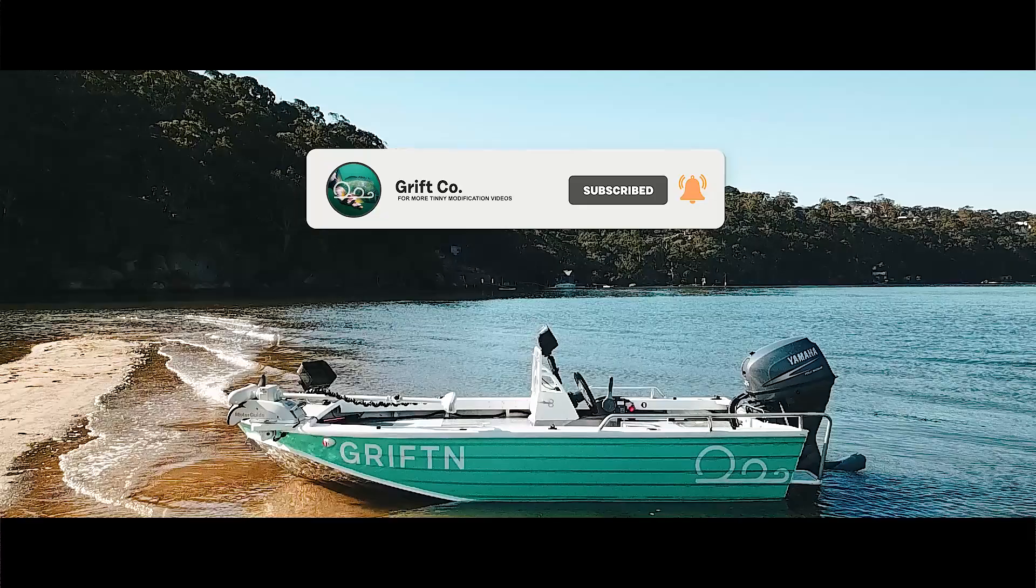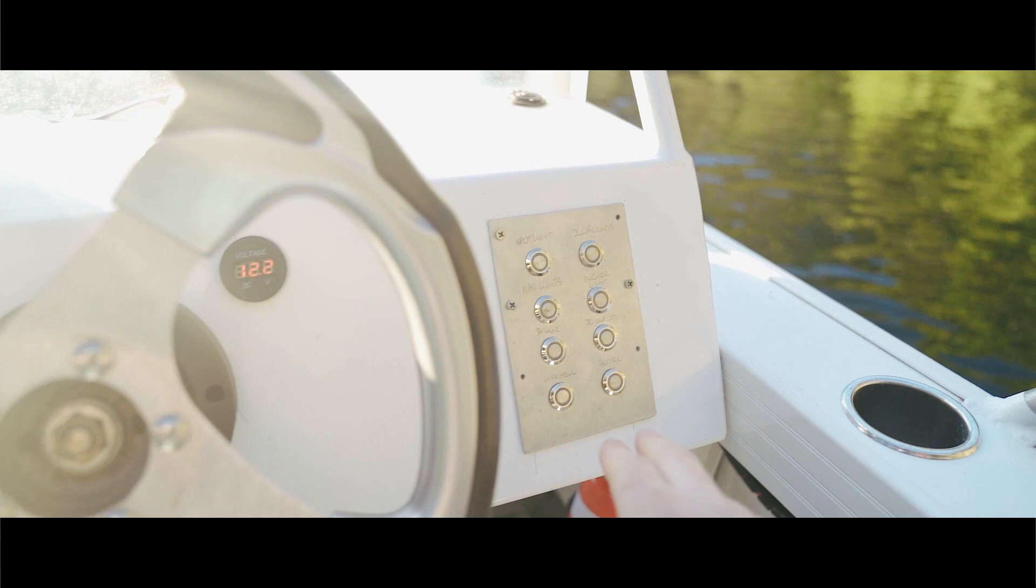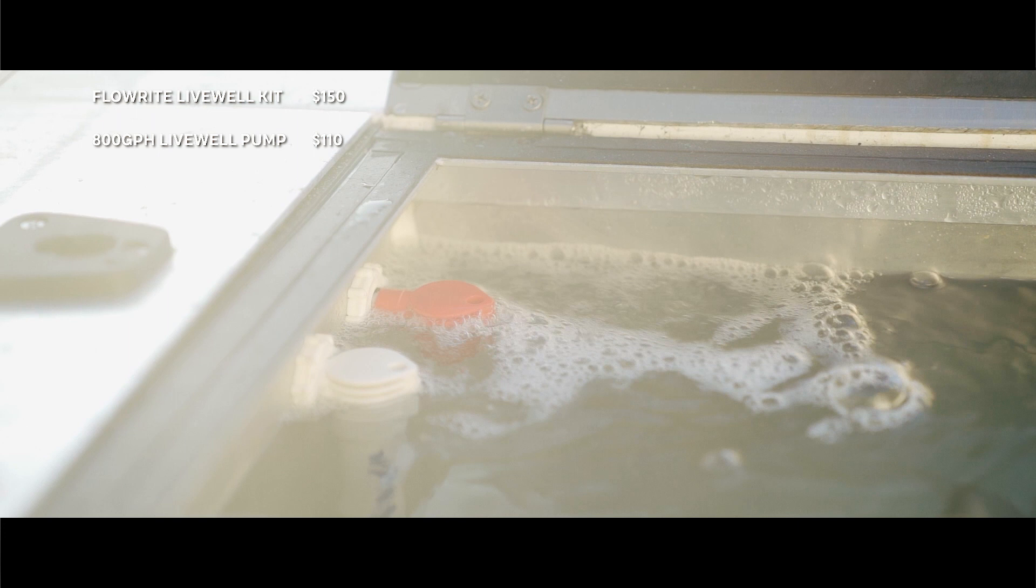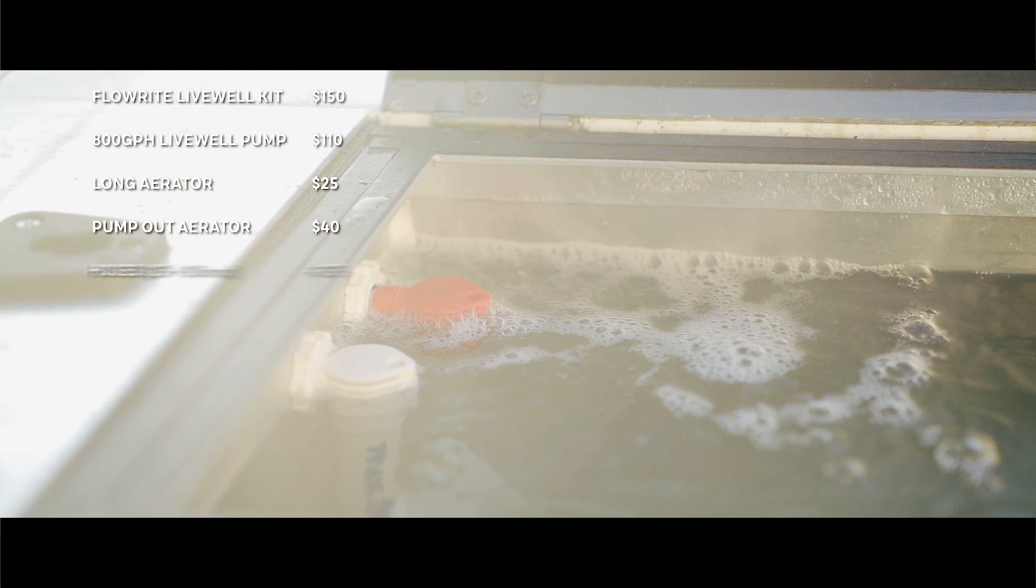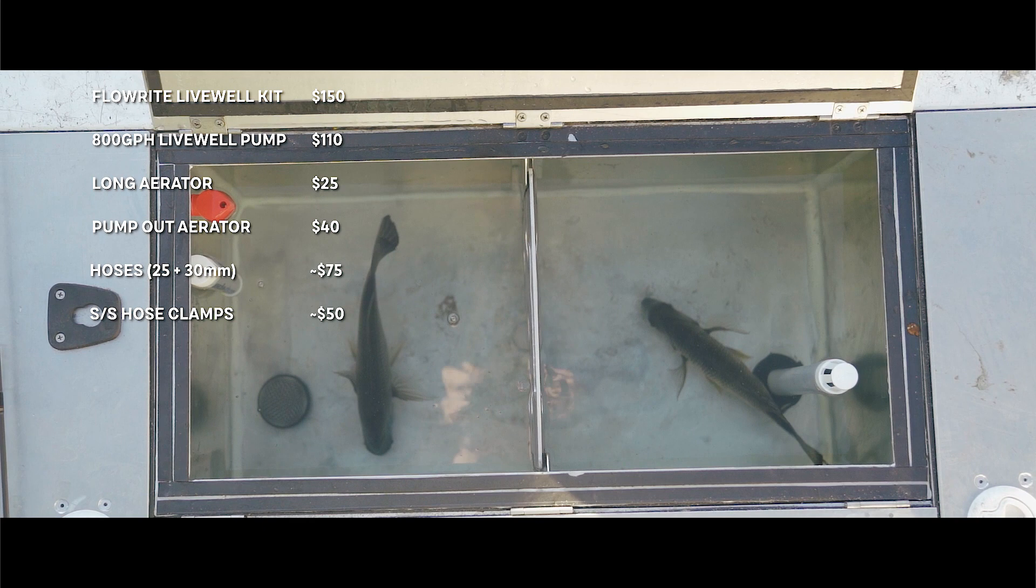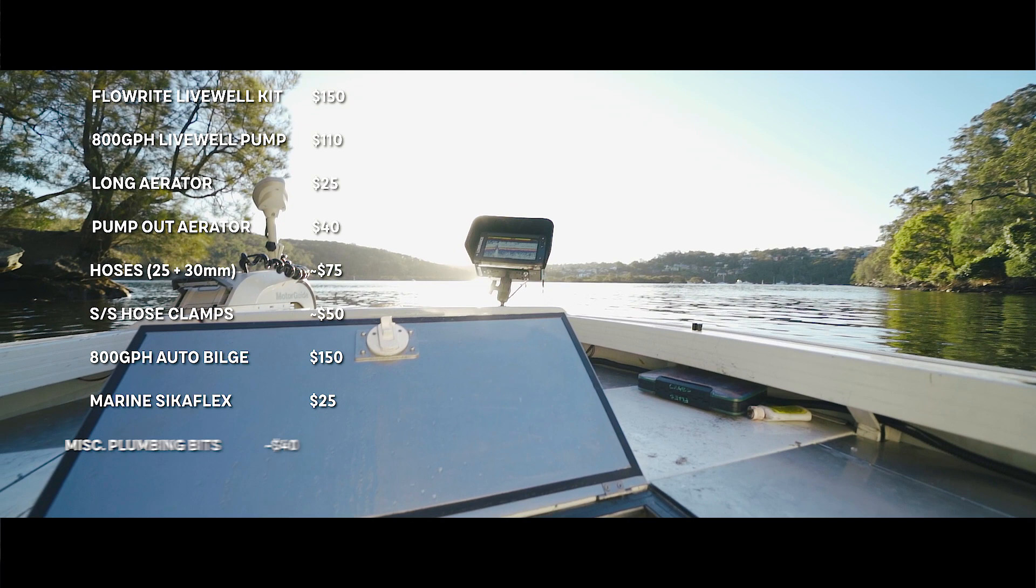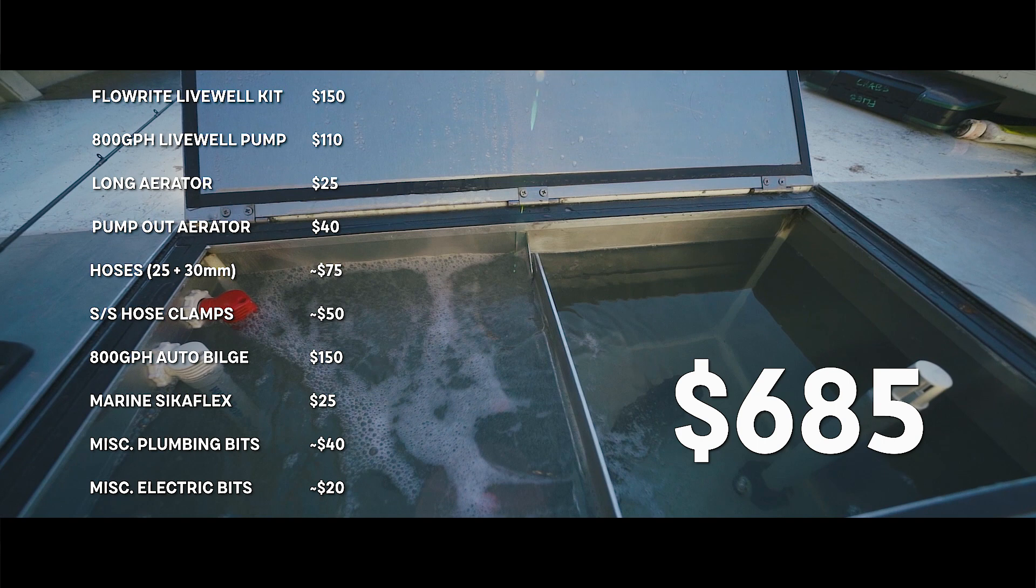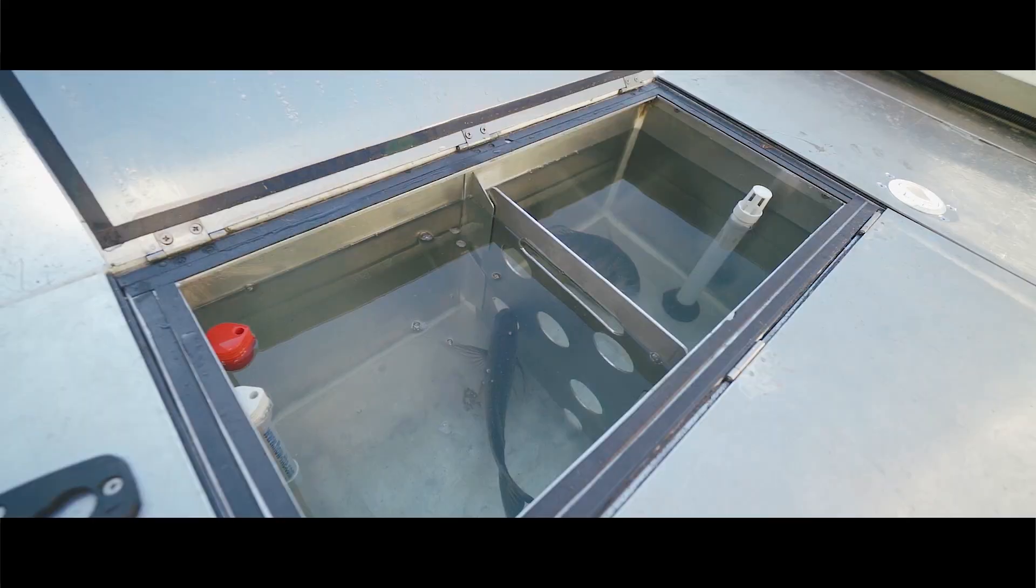Alright guys, as promised, back to the costs. I'm going to rattle these off really quickly. Flowrite Livewell Kit, $150. 800 Gallon Per Hour Livewell Pump, $110. A Long Aerator Nozzle, $25. Pump Out Aerator Nozzle, $40. Hoses, roughly $75. Stainless Hose Clamps, $50. Automatic Bilge Pump, $150. Sikaflex, $25. A handful of extra fittings, $40. And general wiring and electrical pieces, $20. This comes in at roughly $685, which doesn't include the cost of the aluminium tank. All that said and done though, this is the whole kit and caboodle. A basic livewell without bilge and recirculation would come in at a guess $300 if you had a tank handy.